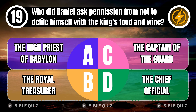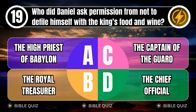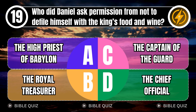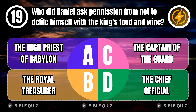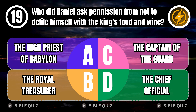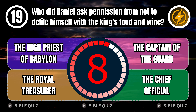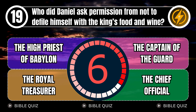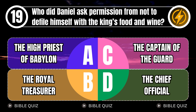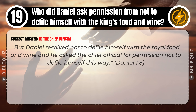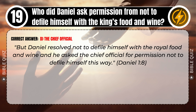Question 19: Who did Daniel ask permission from not to defile himself with the king's food and wine? A. The high priest of Babylon. B. The royal treasurer. C. The captain of the guard. D. The chief official. Correct answer: D. The chief official. But Daniel resolved not to defile himself with the royal food and wine, and he asked the chief official for permission not to defile himself this way. Daniel 1 verse 8.